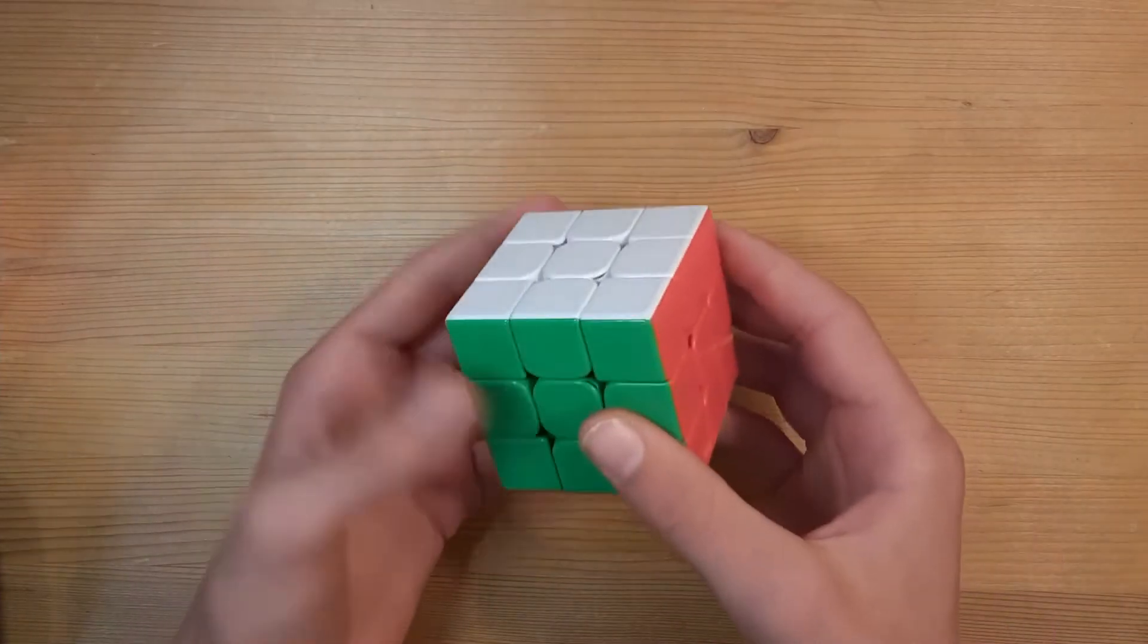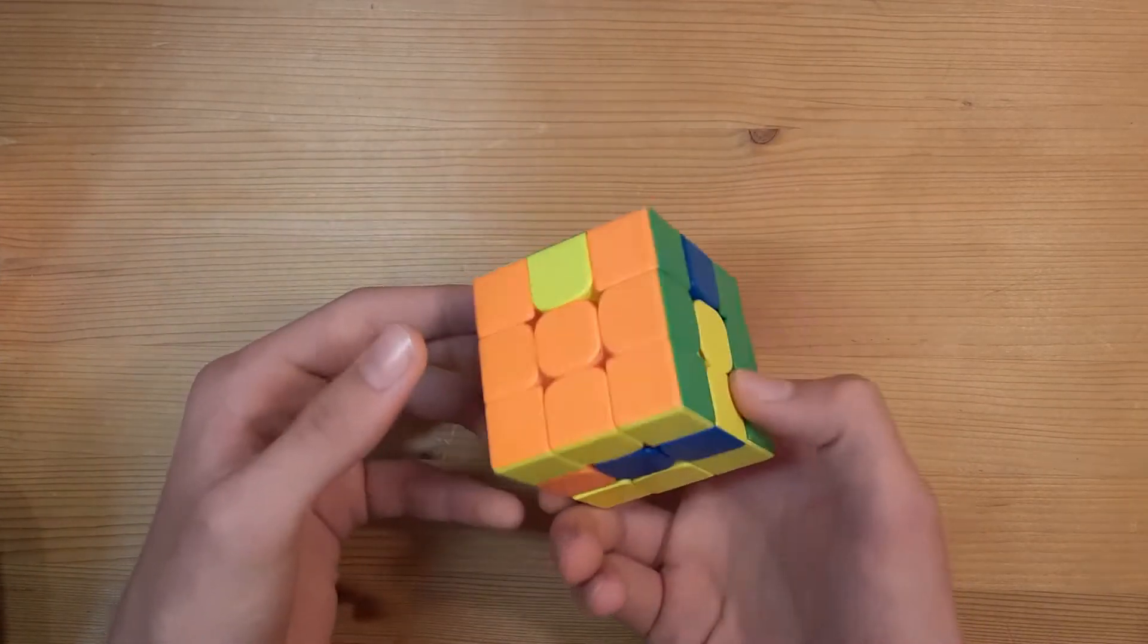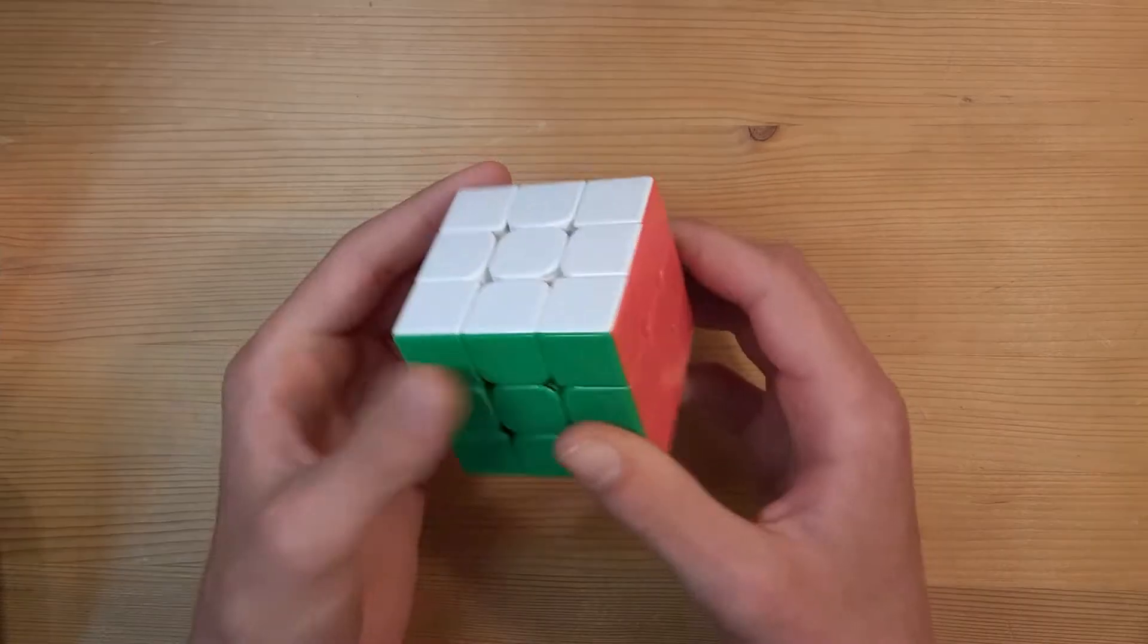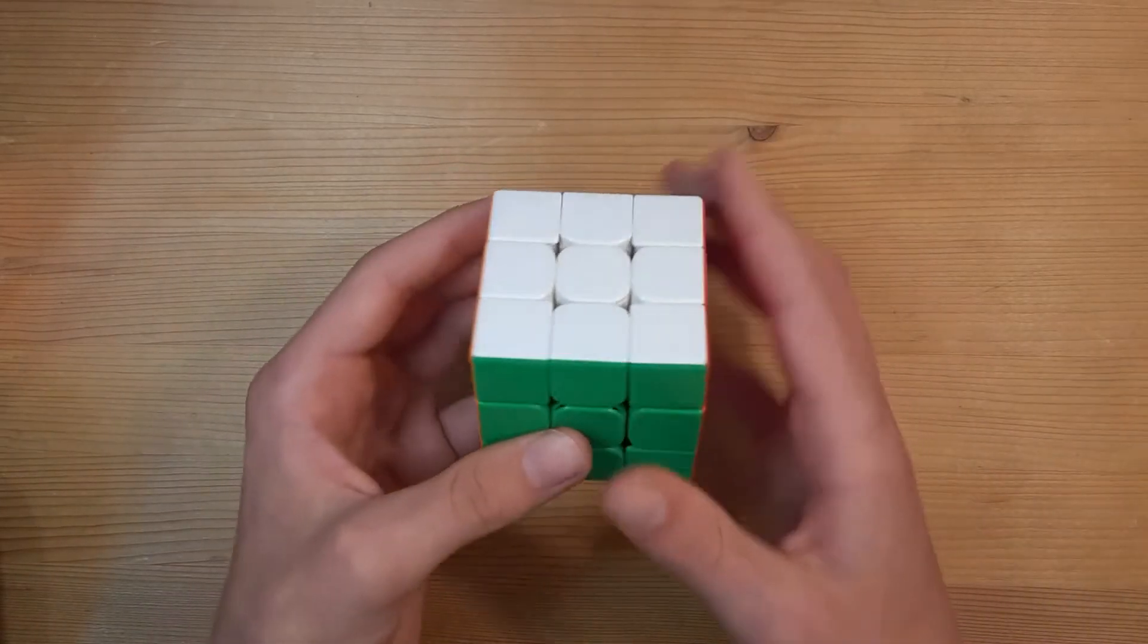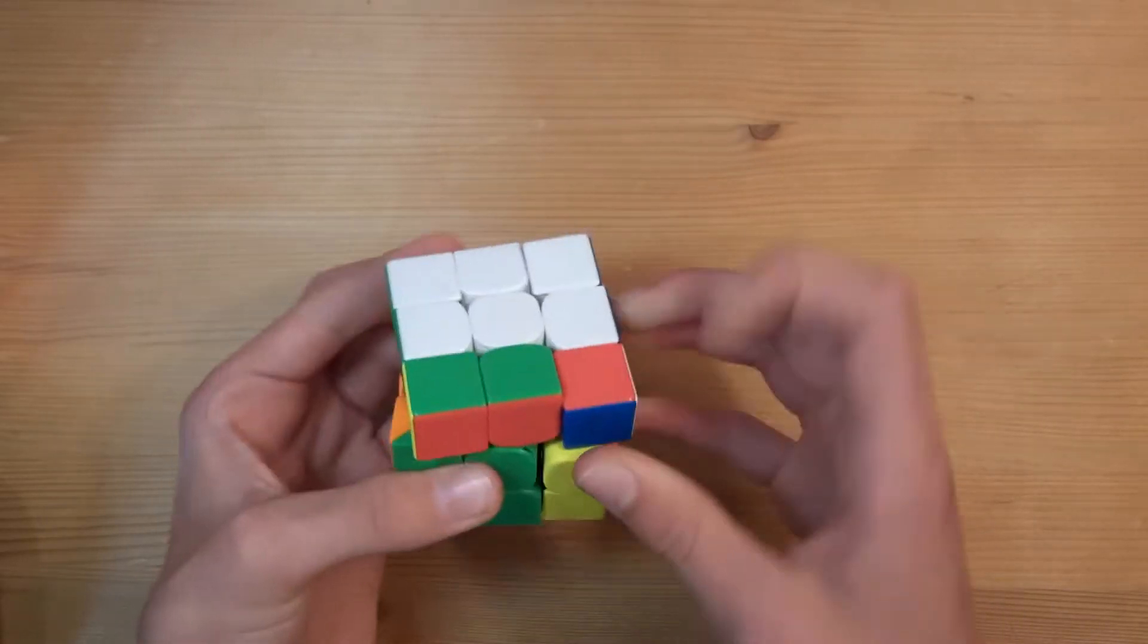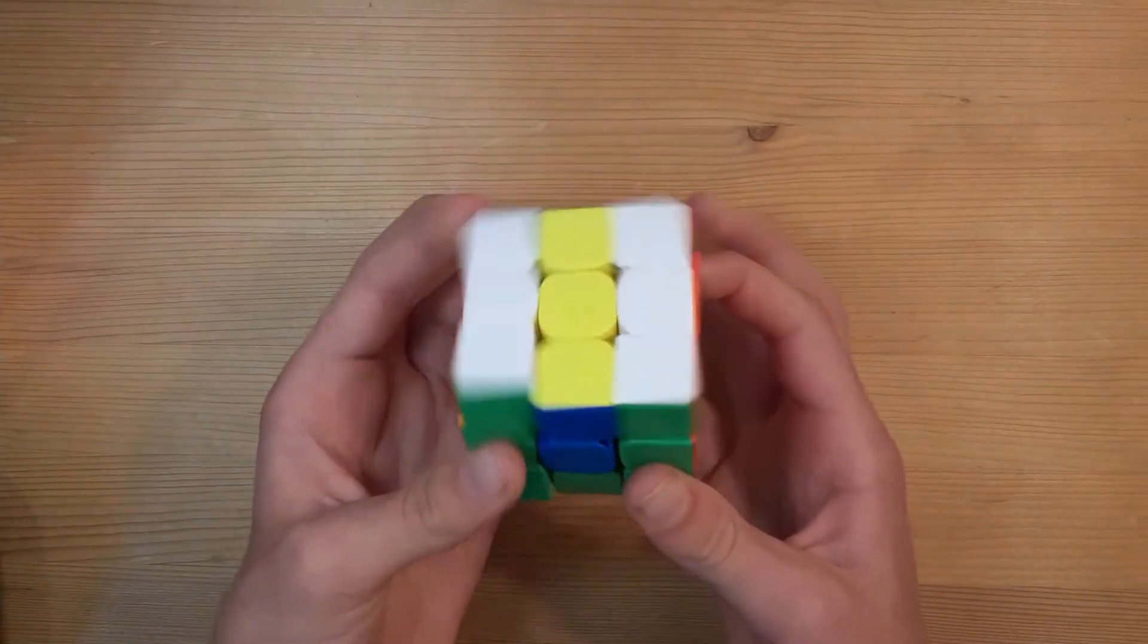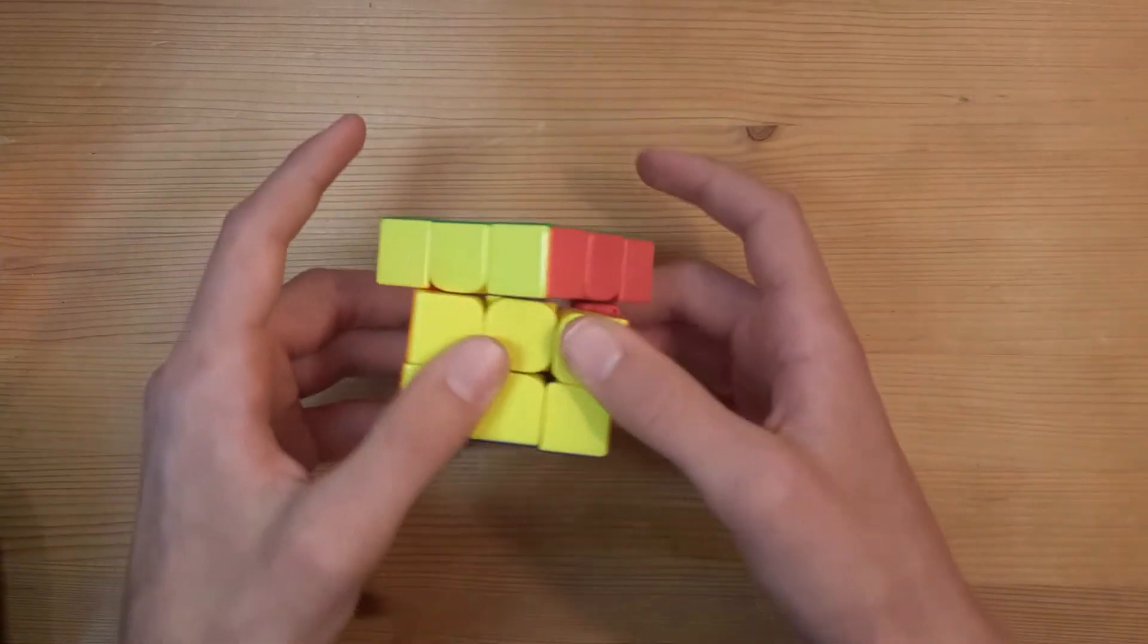Now if we just use the cube like this, it's so loose and loud. Just one flick does so many turns. It's very unstable. So we are going to have to tighten it. Now this is just the tightest it can be without the layers just being glued to each other. It's very stiff. The corner cutting is just terrible. We won't even corner cut this.